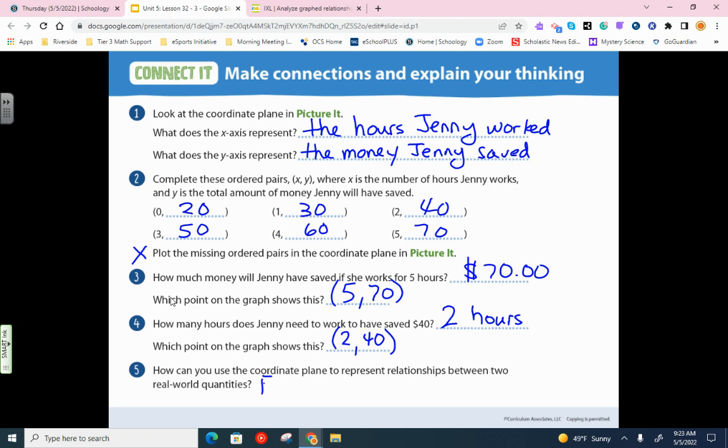How can you use a coordinate plane to represent relationships between two real-world quantities? What that means is each axis, x or y, can show one set of values. Sorry again if I'm going too fast. But again, just hit pause if you need to.